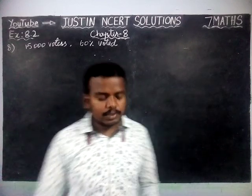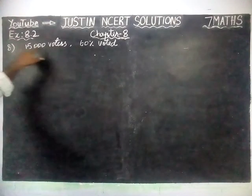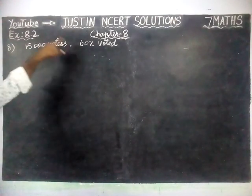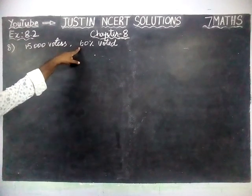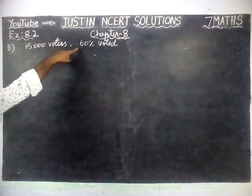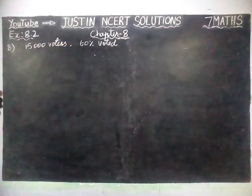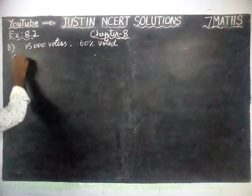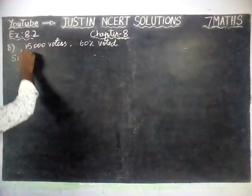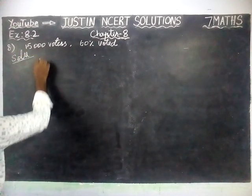Now, the given informations: 15,000 voters are there. Next, 60% of voters voted. Remaining members didn't vote, and how many members did not vote — we have to find it. So first we will write the given informations.